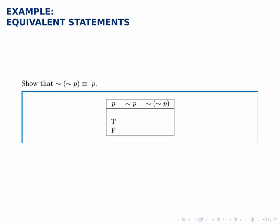Show that not not P is equivalent to P. In other words, show that if we apply the negation twice we get back to where we started.